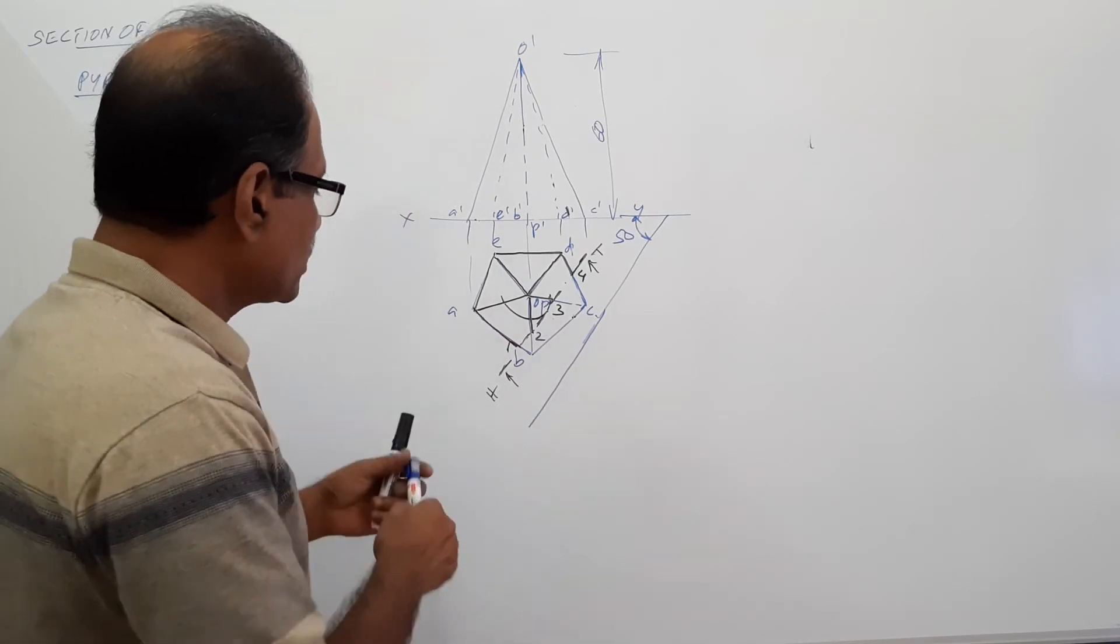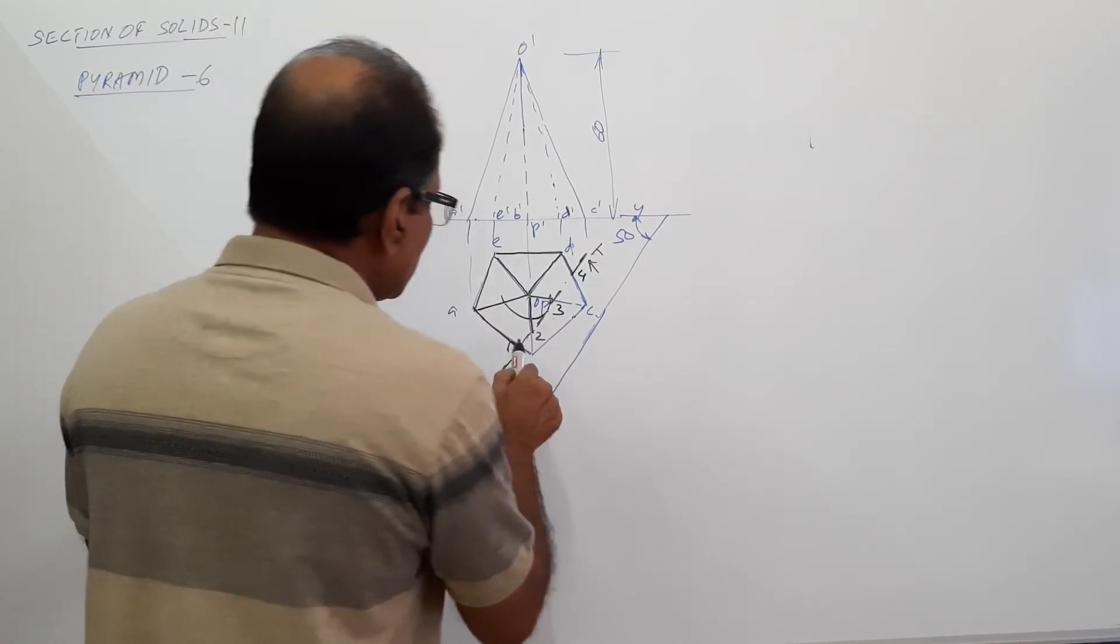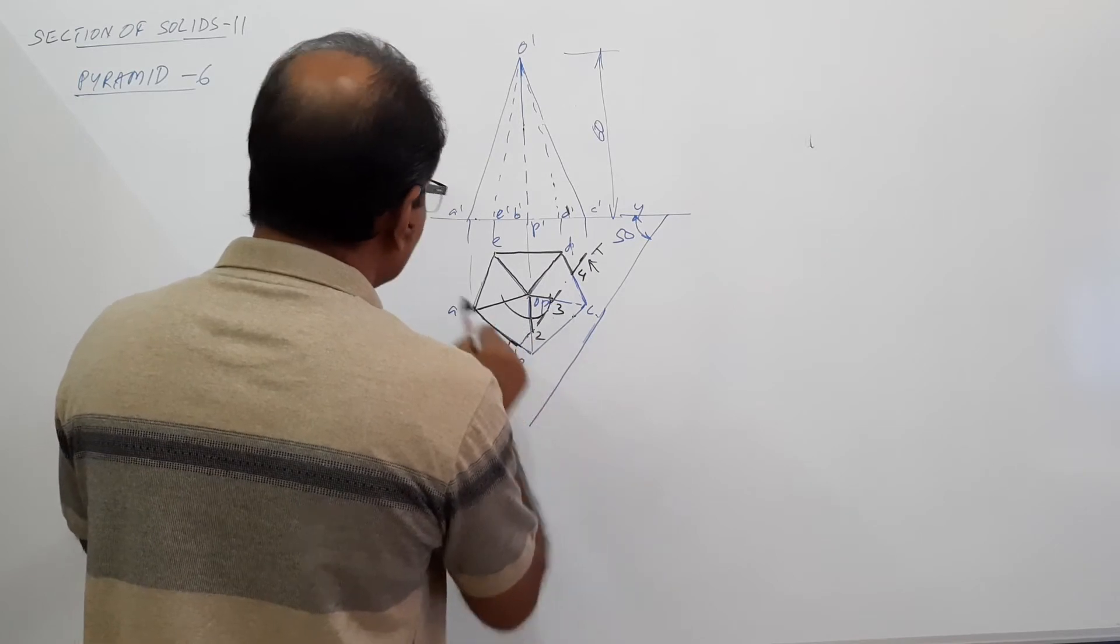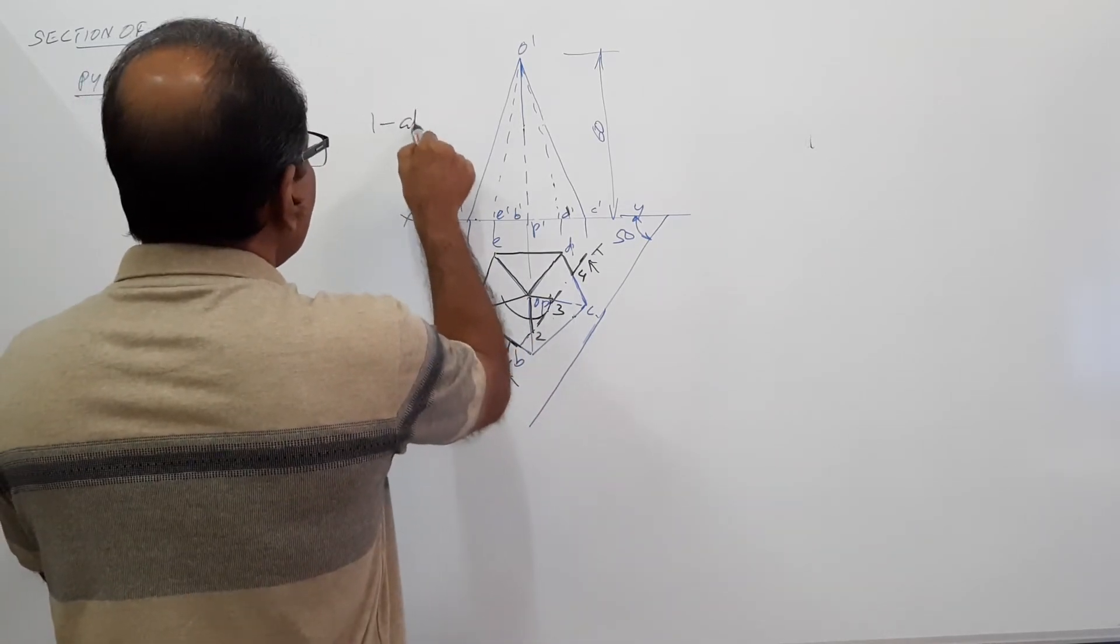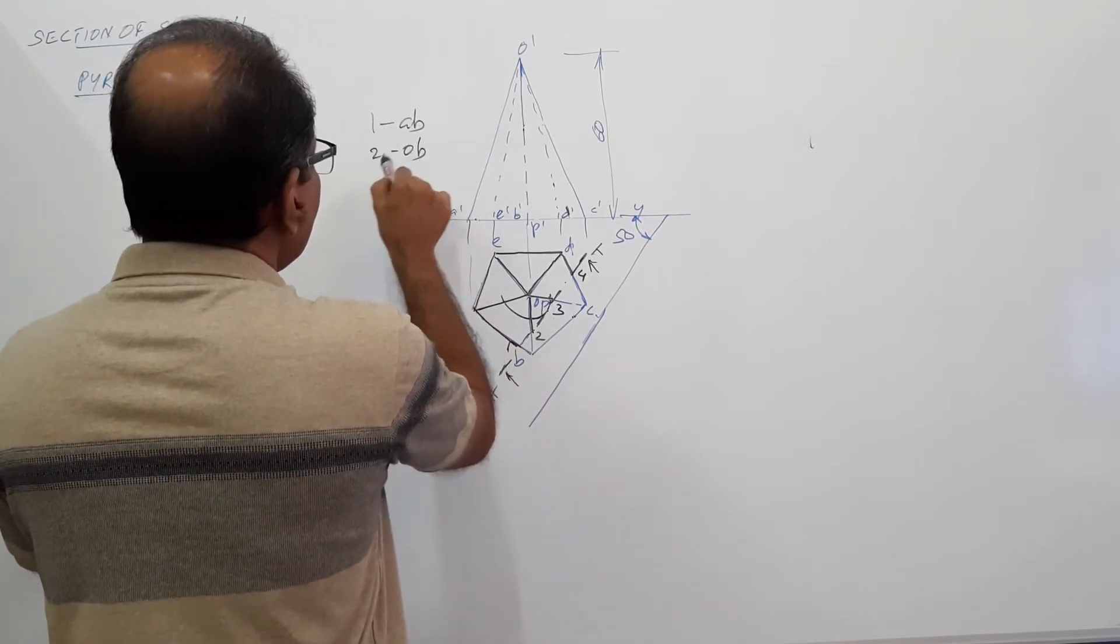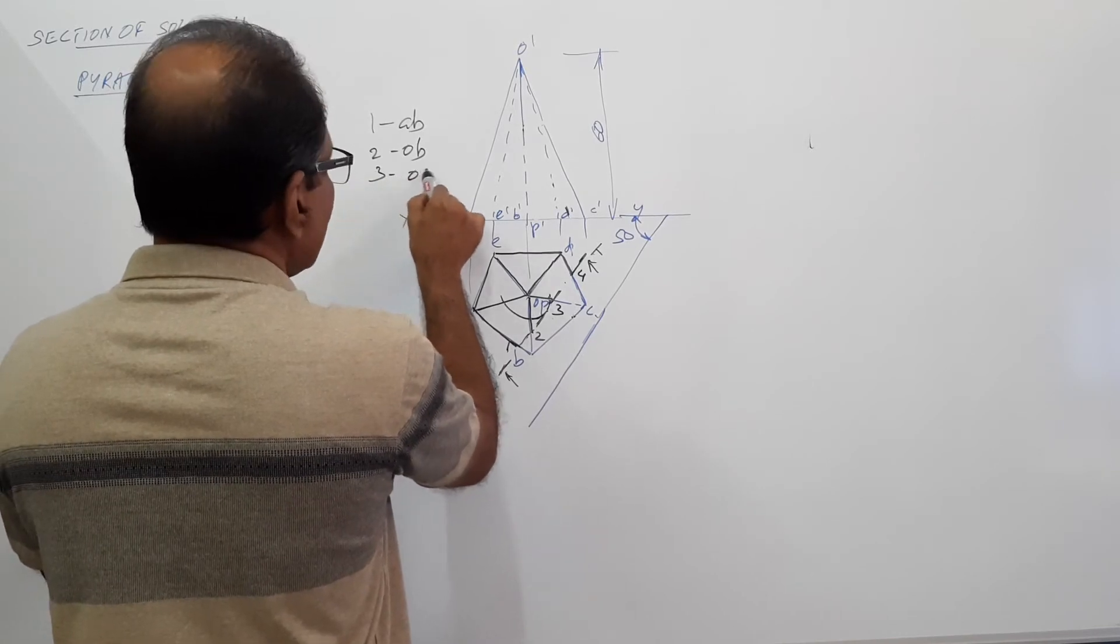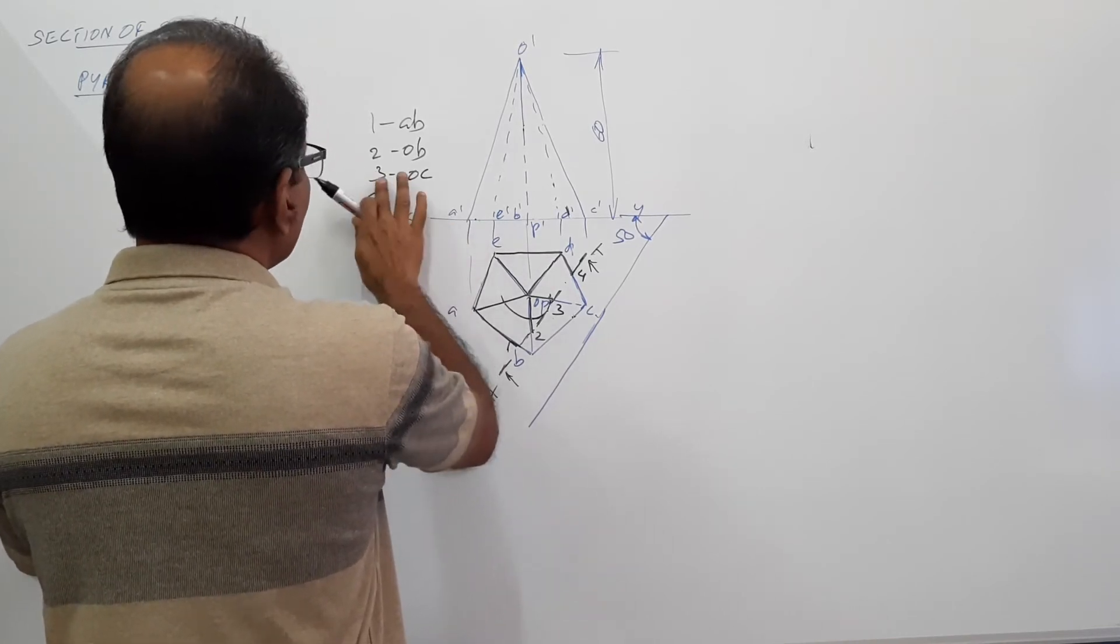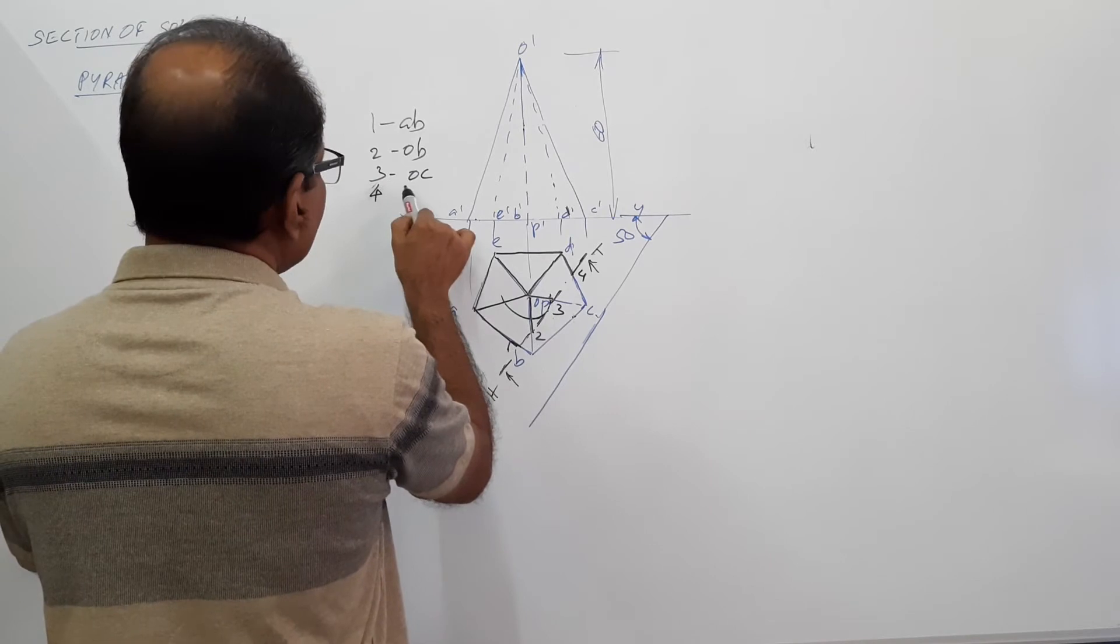Okay, now, where is 1? This is 1. 1 is on AB, so where is 1 dash? 1 is on AB. 2 is on OB. 3 is on OC, and 4 is on CD.